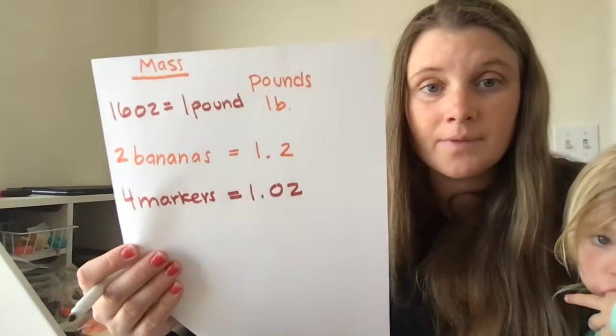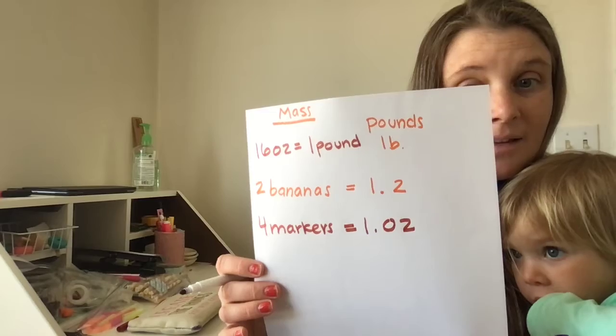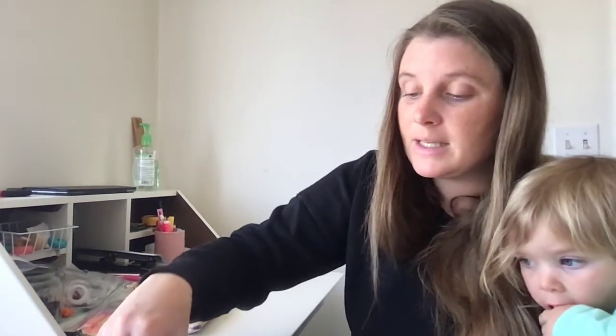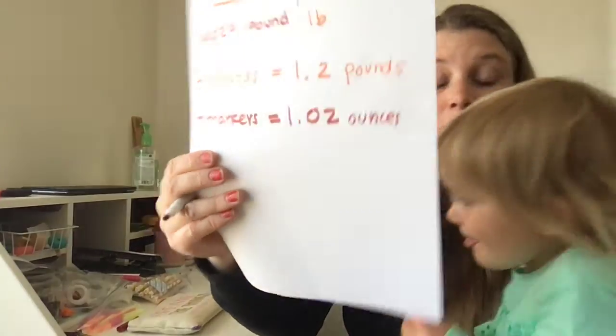How many of your markers did it take to get to about one ounce? Write this down: there are 16 ounces in one pound — 16 oz equals 1 lb. Can you write that down? So 16 ounces makes one pound. Also note: two bananas equals 1.2 pounds, and four markers equals 1.02 ounces.